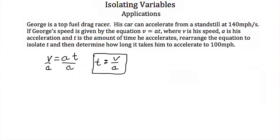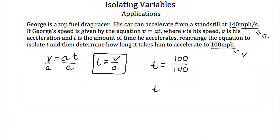Now we're asked to find out how long it takes him to accelerate to 100 miles per hour. 100 miles per hour is the speed he's going to be going, so that's our v. We know the car can accelerate at 140 miles per hour per second, so that's our a. Substituting in, we get t is equal to 100 over 140. We find out that George's top fuel drag racer can accelerate to 100 miles per hour in 0.71 seconds.